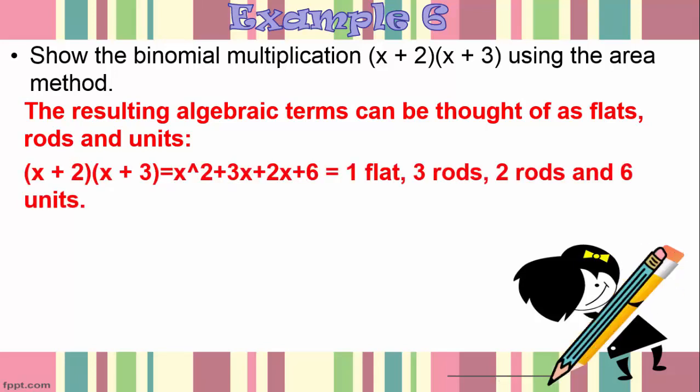So we have x plus 2 times x plus 3 is equal to x squared plus 3x plus 2x plus 6, which is equal to 1 flat, 3 rods, 2 rods, and 6 units.